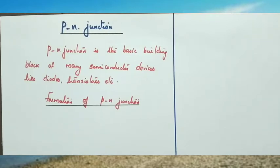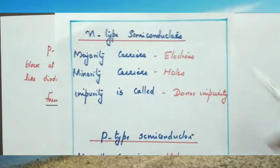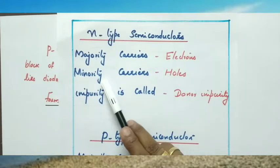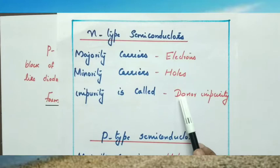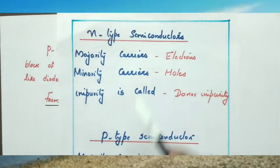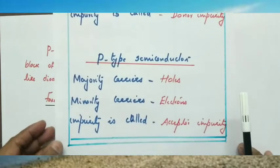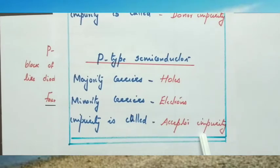In the last class we studied what is a P type semiconductor and what is an N type semiconductor. In an N type semiconductor, majority carriers are electrons, minority carriers are holes, and the impurity is called a donor impurity.